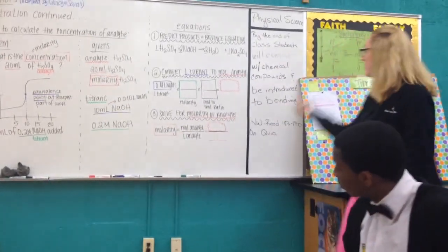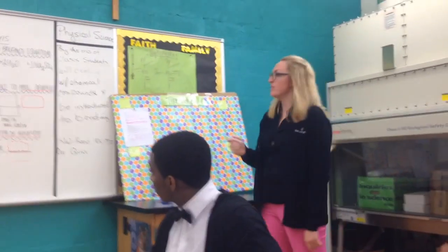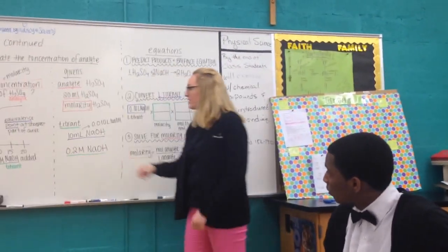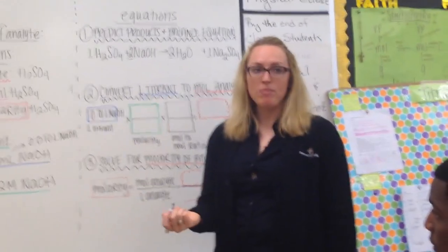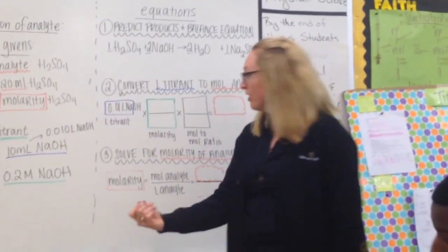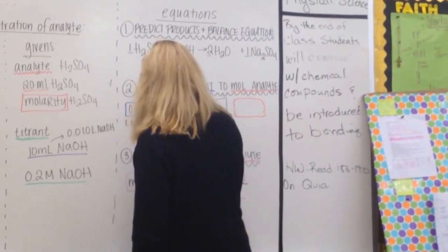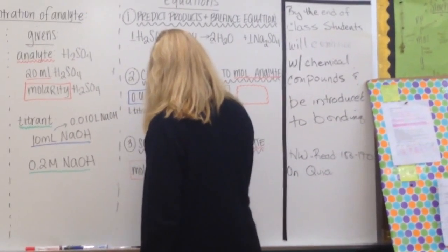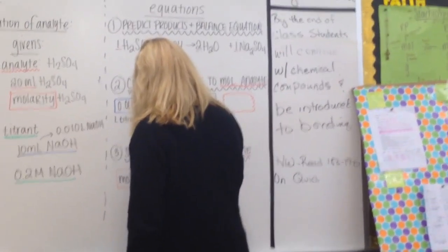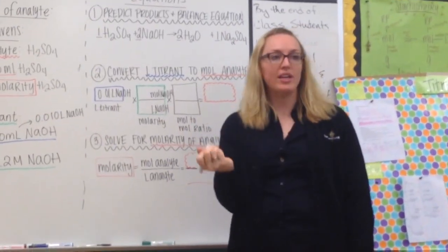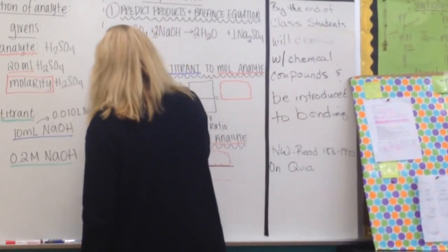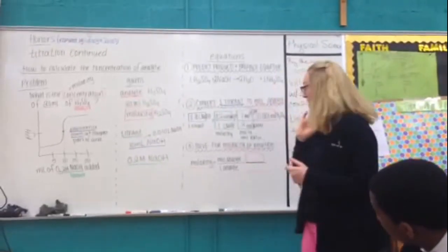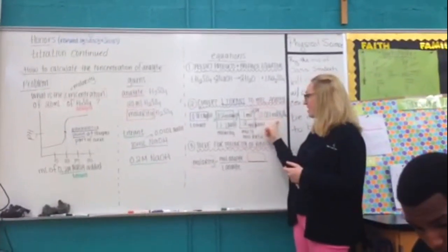If I want to go from liters to moles, the next thing I need to use is molarity, which is also given in my problem. The molarity is 0.2M, which I know stands for 0.2 moles per liter. So I have moles of NaOH up top, liters of NaOH on the bottom. And since it's 0.2 moles per liter, I'm going to put 0.2 next to moles and one next to liter. So now I have my moles of NaOH.